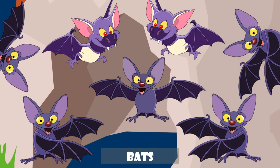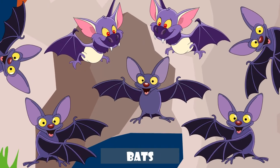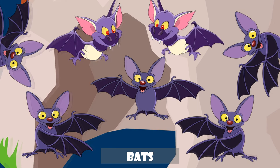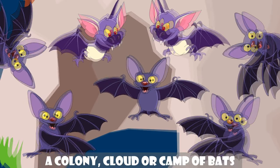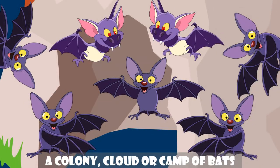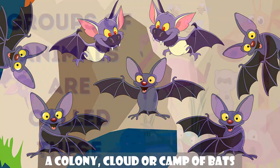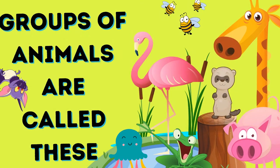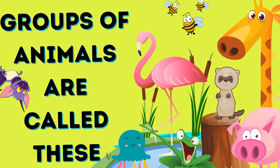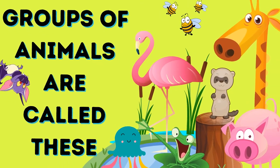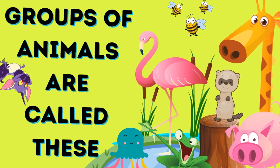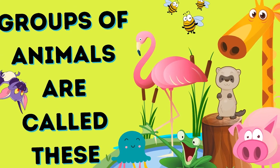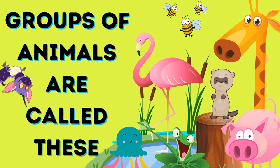A group of bears is called a sloth or sleuth of bears. A group of bats is called a colony, cloud, or a camp of bats. So there you go — now you know what certain groups of animals are called.